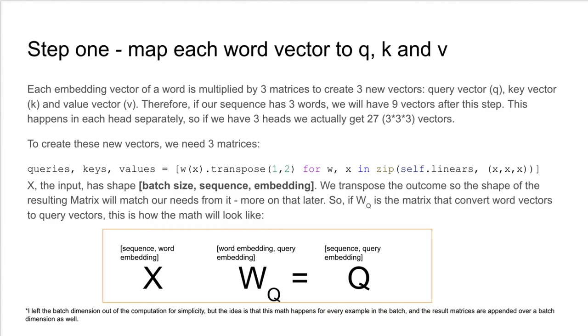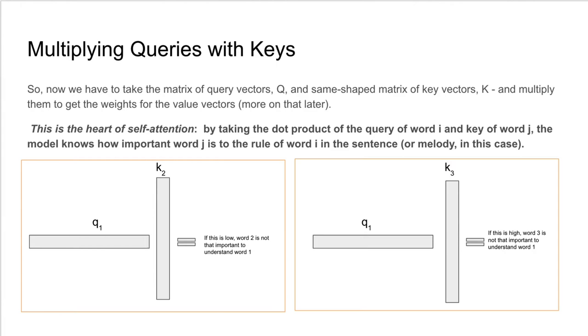Now X, the input, has the shape batch size, sequence length, and embedding size. We transpose the outcome so that the shape of the resulting matrix will match our needs from it later. So if WQ is the matrix that converts word vectors to query vectors, this is how the matrix multiplication will look like.